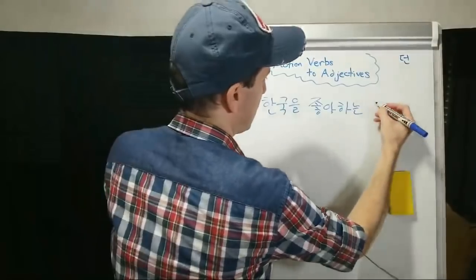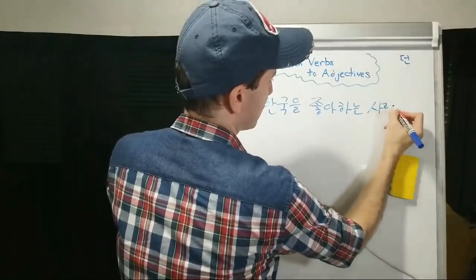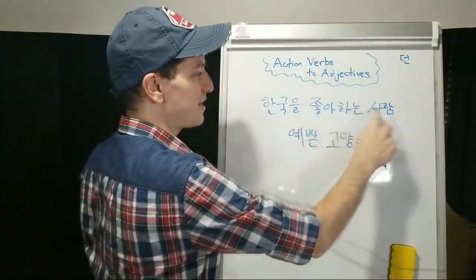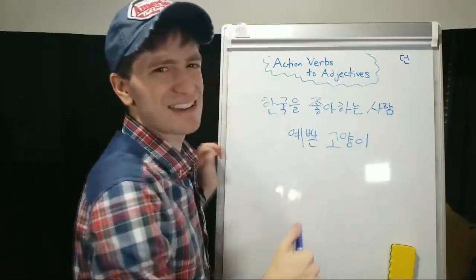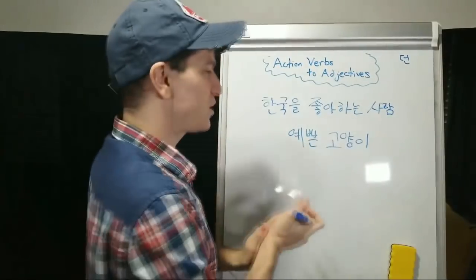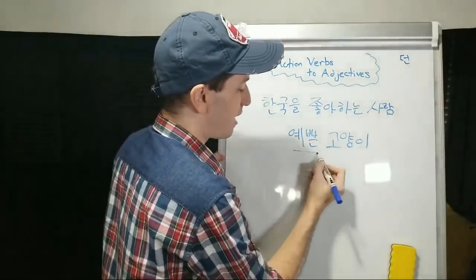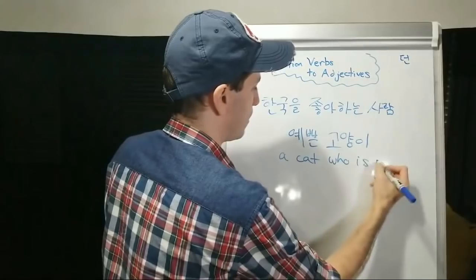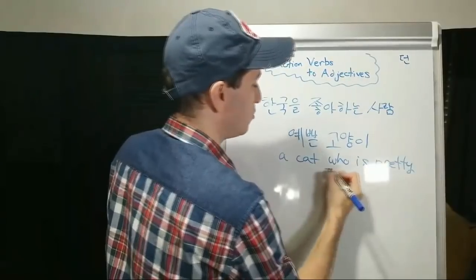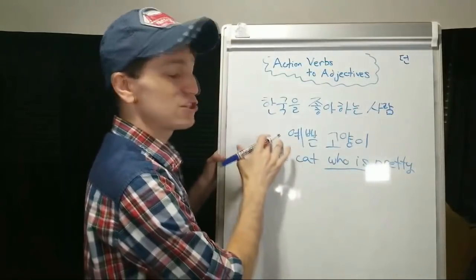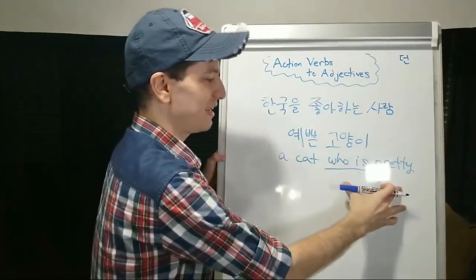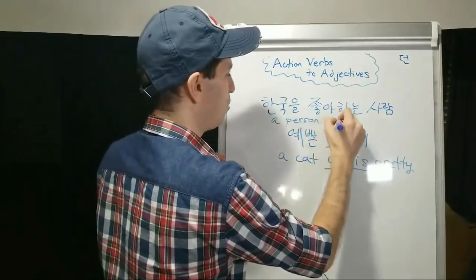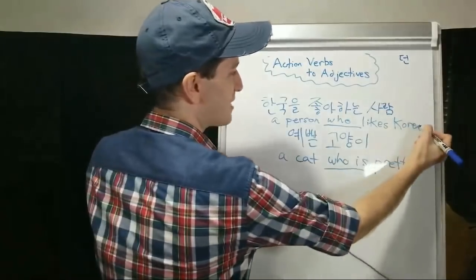한국을 좋아하는 사람 — a person who likes Korea. And we can have 예쁜 고양이 — a pretty cat. You might think: how are these related? Actually, 예쁜 고양이 literally does not mean just pretty cat. What you can think of it as meaning is a cat who is — because the verb 예쁘다 means to be — so is pretty. A cat that is pretty. A person who likes Korea. Does this make sense?